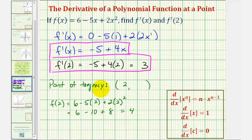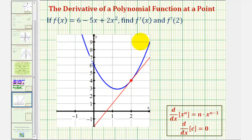So the point of tangency, where the tangent line has a slope of 3, would be 2 comma 4. So let's go ahead and take a look at the graph of this. Here's a graph of our quadratic function. Here's the point of tangency that we found, 2 comma 4.